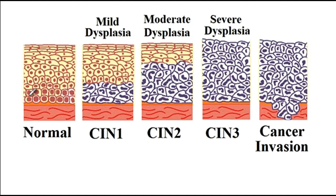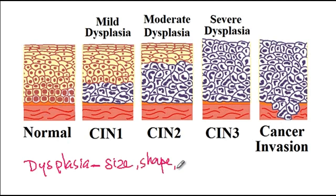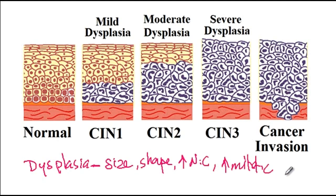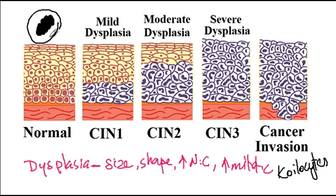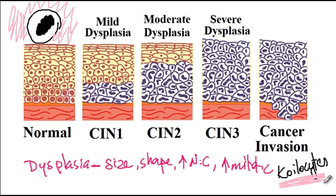The normal epithelium of the cervix can progress into cervical cancer through several steps. On the top layer is normal epithelium, below which is the basement membrane, and then the muscle. Dysplasia is a step before cancer; dysplastic cells have changes in size, shape, and orientation, increased nuclear-to-cytoplasmic ratio, and increased mitotic figures. One finding associated with HPV infection is the presence of koilocytes, where the nucleus has a raisinoid shape with a perinuclear halo visible on histology.